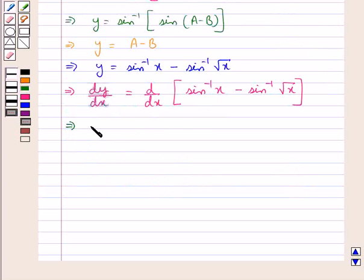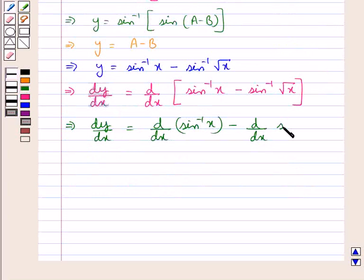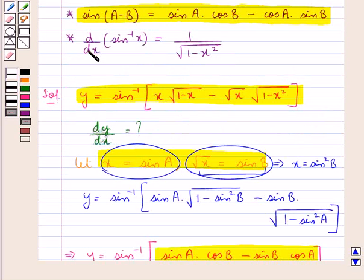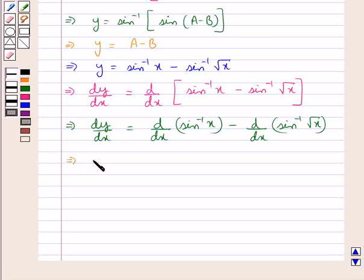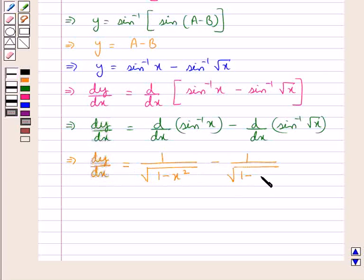That is, dy by dx equals dy by dx of sin inverse x minus dy by dx of sin inverse of square root x. We already know that dy by dx of sin inverse x is equal to 1 upon square root of 1 minus x square. Using this, dy by dx equals 1 upon square root of 1 minus x square, minus 1 upon square root of 1 minus (square root x) squared, into dy by dx of square root x.